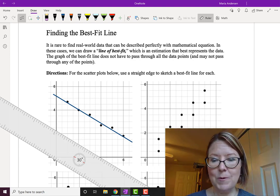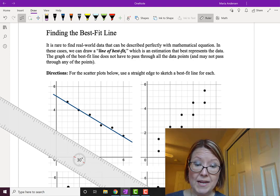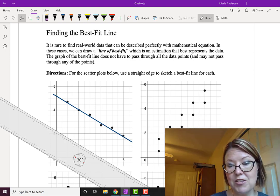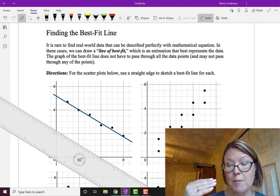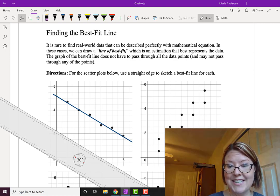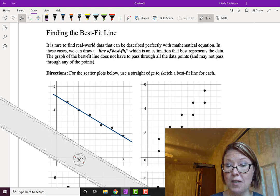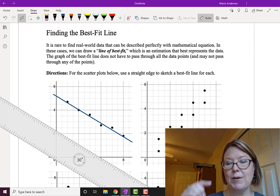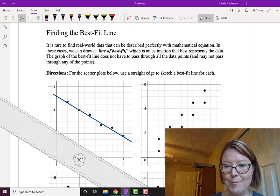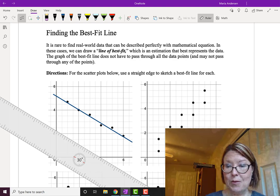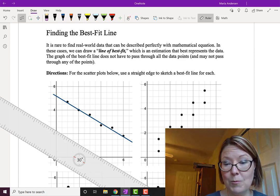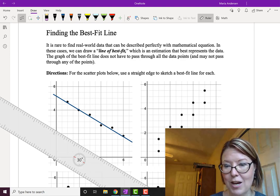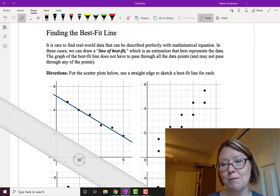In the second example we have a scatter plot of points. Every time we have a value there's another value exactly one unit above it. So we have points at 1, 0.5 and 1, 1.5. 2 comma 1.5 and 2 comma 2.5. 3 comma 2.5 and 3 comma 3.5. 4 comma 3.5 and 4 comma 4.5 and 5 comma 5.5.